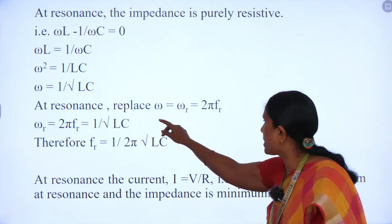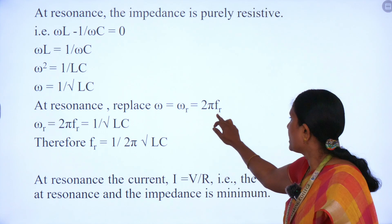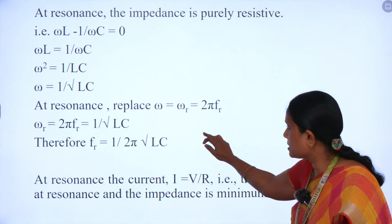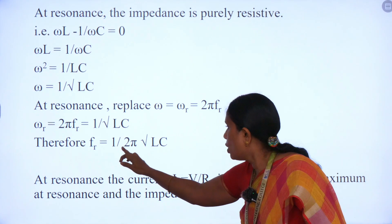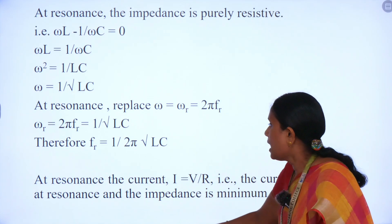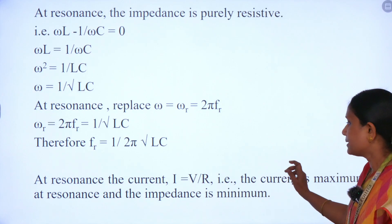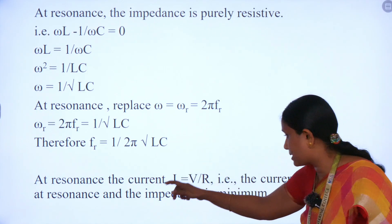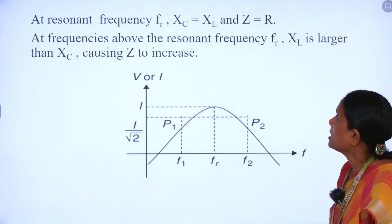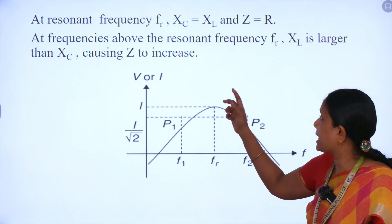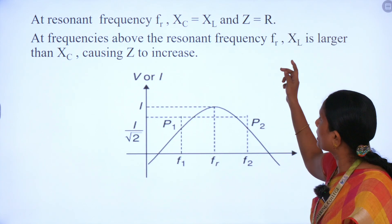At resonance, replacing ω with ωR, which is nothing but 2πFR, where FR is the resonant frequency. From this, we calculate FR = 1 / (2π√(LC)). At resonance, the current I = V/R — that is, the current is maximum at resonance and the impedance is minimum. At resonant frequency FR, XC equals XL and we conclude that impedance is purely resistive.